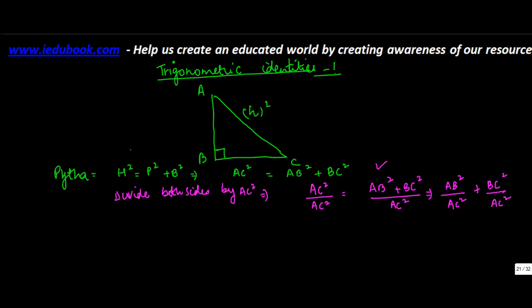This is equal to 1 on the right side. Now this you can also write as (AB/AC)² plus (BC/AC)². I just put both of them as squares and wrote it like this.